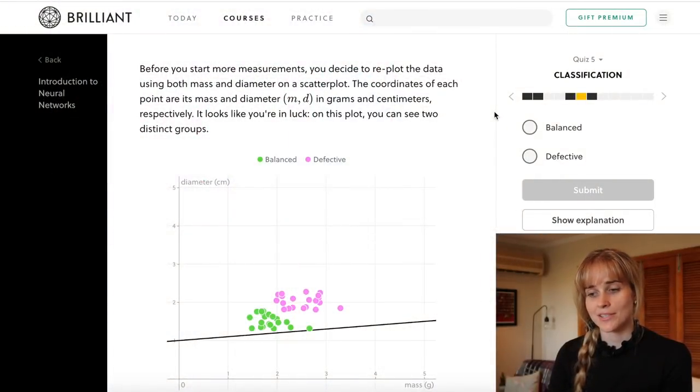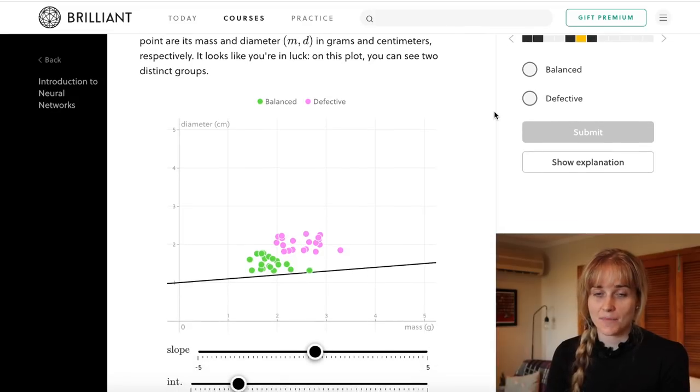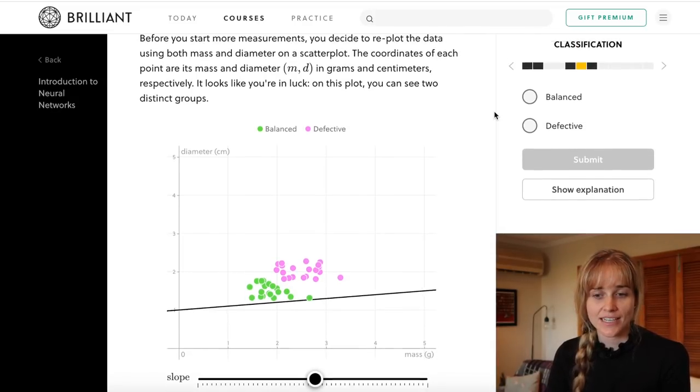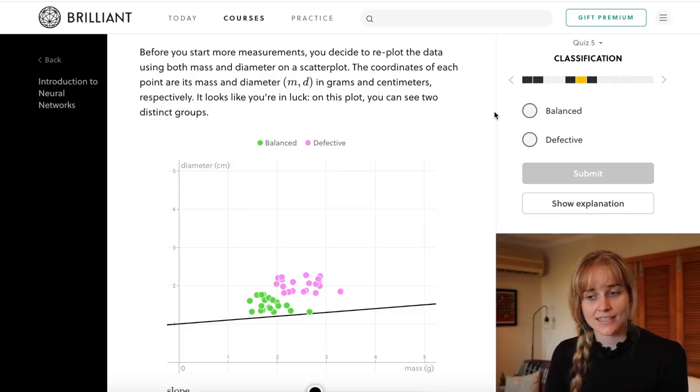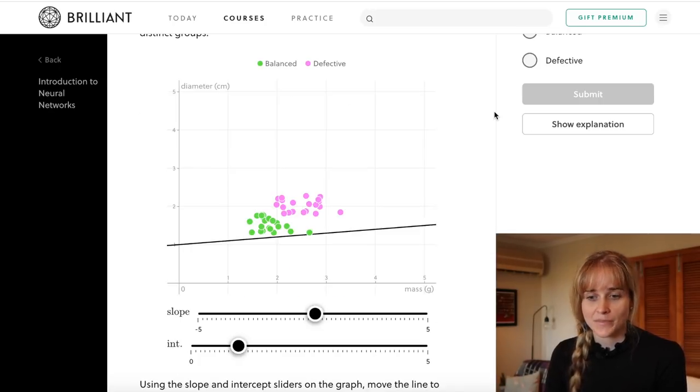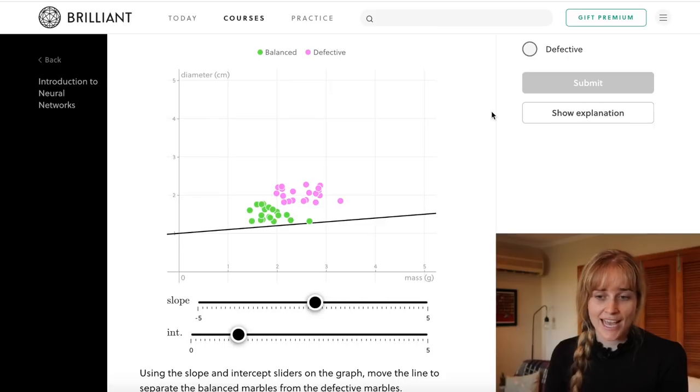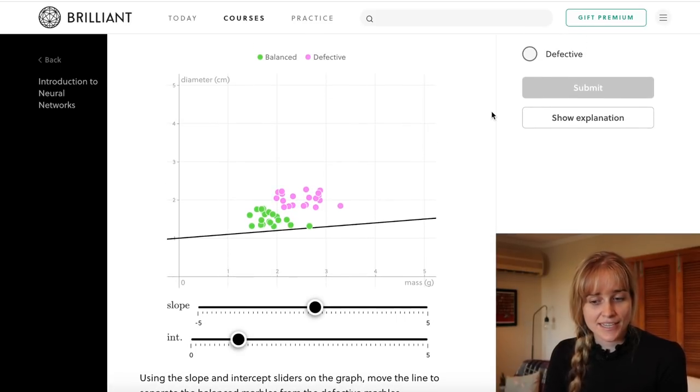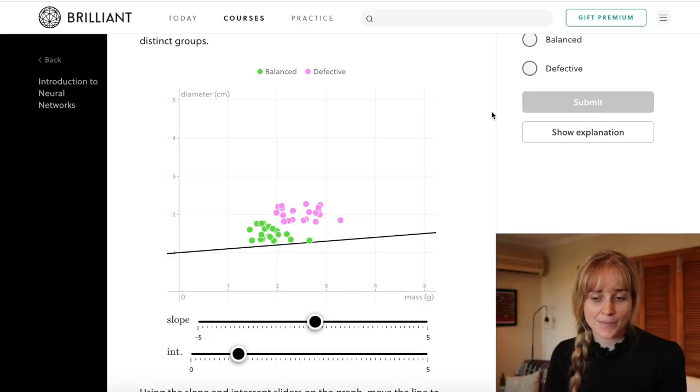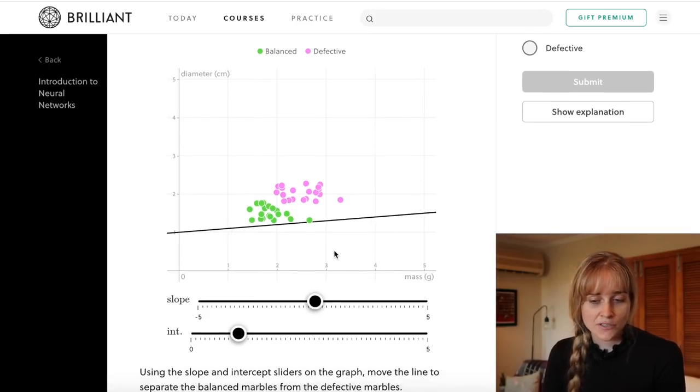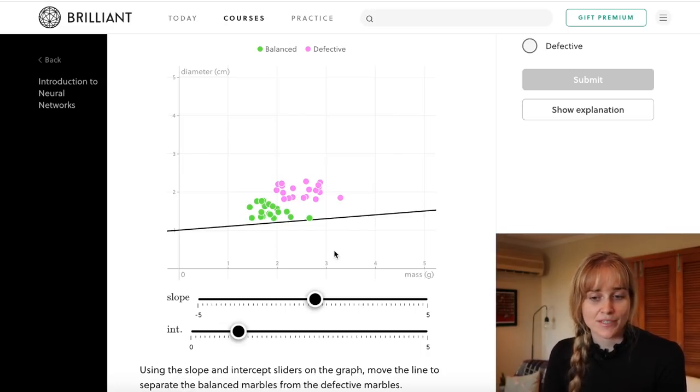Jumping into the next quiz which is called classification, we then have another example but this time using continuous data. The particular example that they've given us is a bunch of marbles and some of the marbles are defective. So ordinarily the marbles should be balanced but some of them are defective because they have impurities inside them. The person in the example has measured the diameter and the mass of every marble and plotted that on a graph, and we're going to try and separate based on diameter and mass which marbles might be defective.